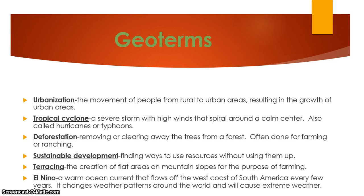Tropical cyclone: a severe storm with high winds that spiral around a calm center — these are also called hurricanes or typhoons. Deforestation: removing or clearing away the trees from a forest, often done for farming or ranching. Sustainable development: finding ways in which to use resources without using them up.